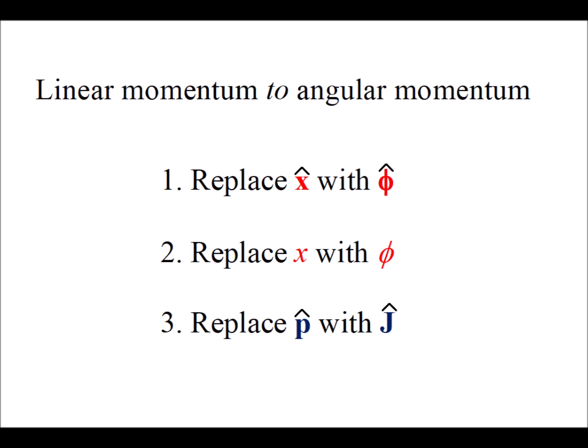The first is to find the commutator of linear momentum and position with the commutator of angular momentum and angle. So we're going to show that simply by replacing symbols we can essentially solve a different problem by the same exact method.